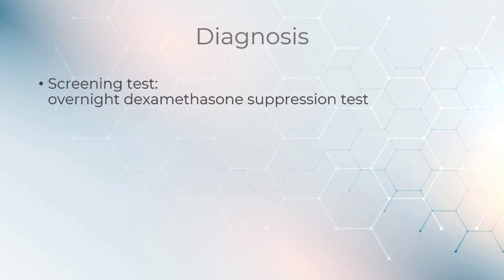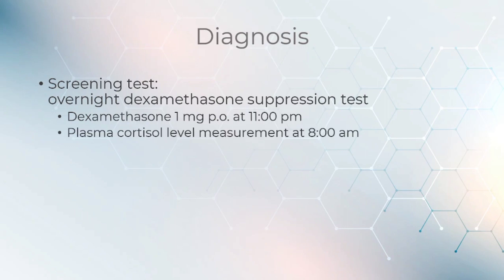A screening test for Cushing syndrome is an overnight dexamethasone suppression test. For this, 1 mg of dexamethasone is taken per os at 11 pm, and then the plasma cortisol level is measured at 8 am. To exclude Cushing syndrome, the plasma cortisol level at 8 am should be less than 5 mcg per 100 ml.